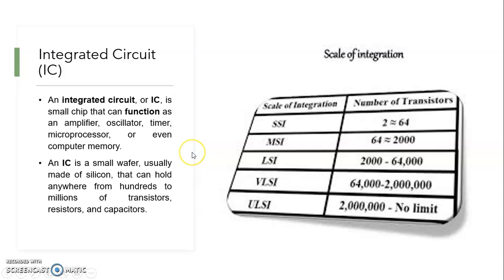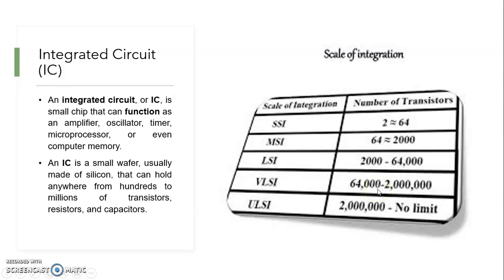Now, what is an IC? An IC is an integrated circuit on a small wafer which can function as an amplifier, oscillator, timer, microprocessor, etc. Depending upon the number of transistors per wafer or chip, ICs are classified into small scale integration, medium scale integration, large scale integration, very large scale integration, and ultra large scale integration.